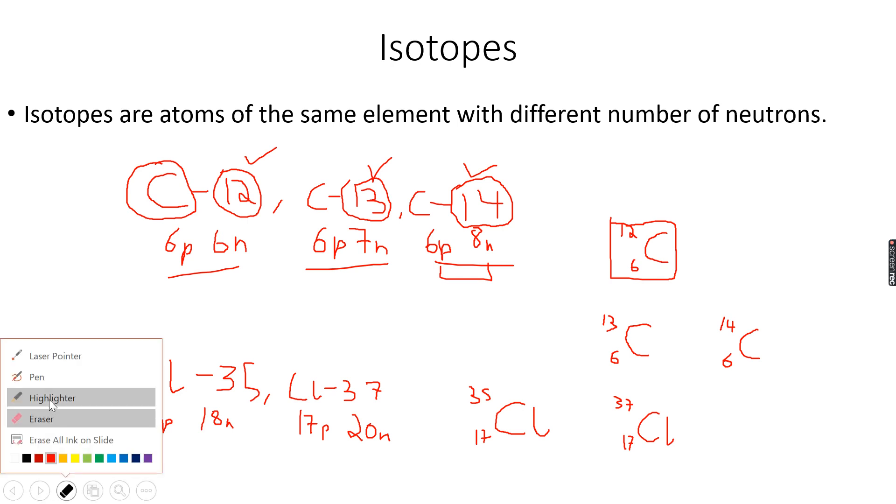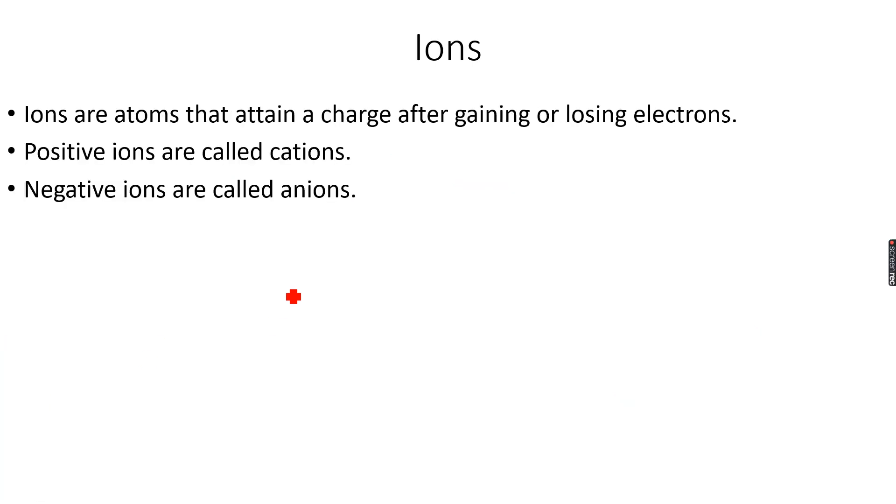We are done with isotopes and let's do ions. Ions are atoms that attain a charge after gaining or losing electrons. This is a sodium atom. It has 11 protons and it has 11 electrons, so it's neutral.